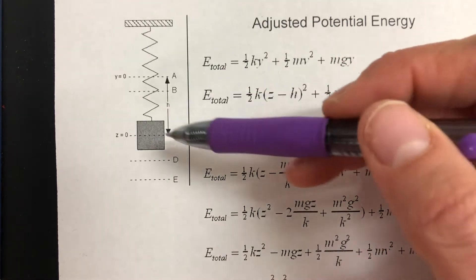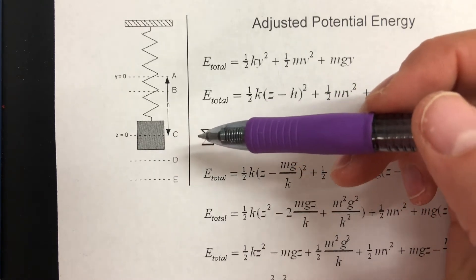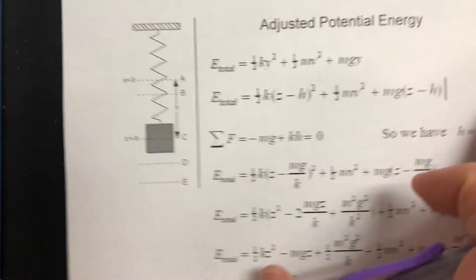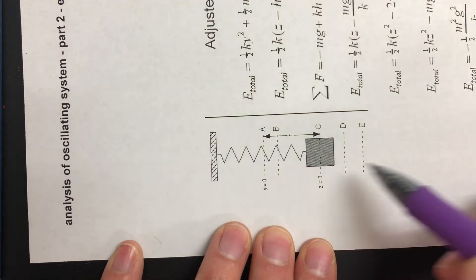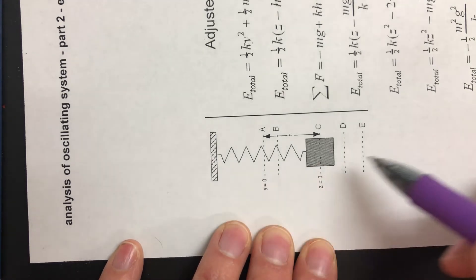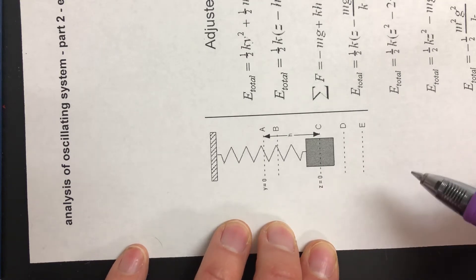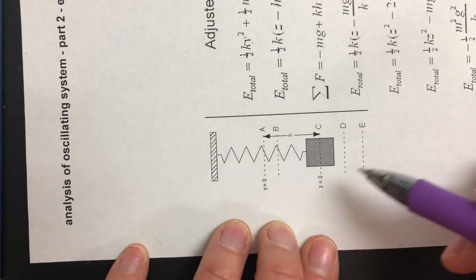Ideally to look at this whole change in energy system, we would have this on a horizontal situation where you had a frictionless surface and this spring would both push and pull. But finding those springs to use in an experiment and having a frictionless surface is really challenging and I just don't have that.